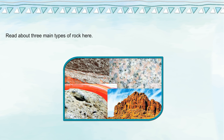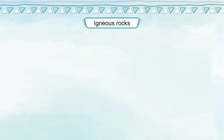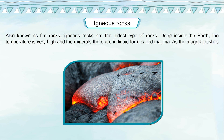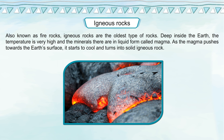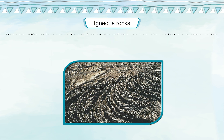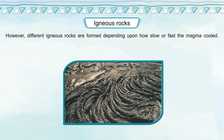There are three main types of rocks. Igneous rocks, also known as fire rocks, are the oldest type of rocks. Deep inside the earth, the temperature is very high and the minerals there are in liquid form called magma. As the magma pushes towards the earth's surface, it starts to cool and turns into solid igneous rock. Different igneous rocks are formed depending upon how slow or fast the magma cooled.